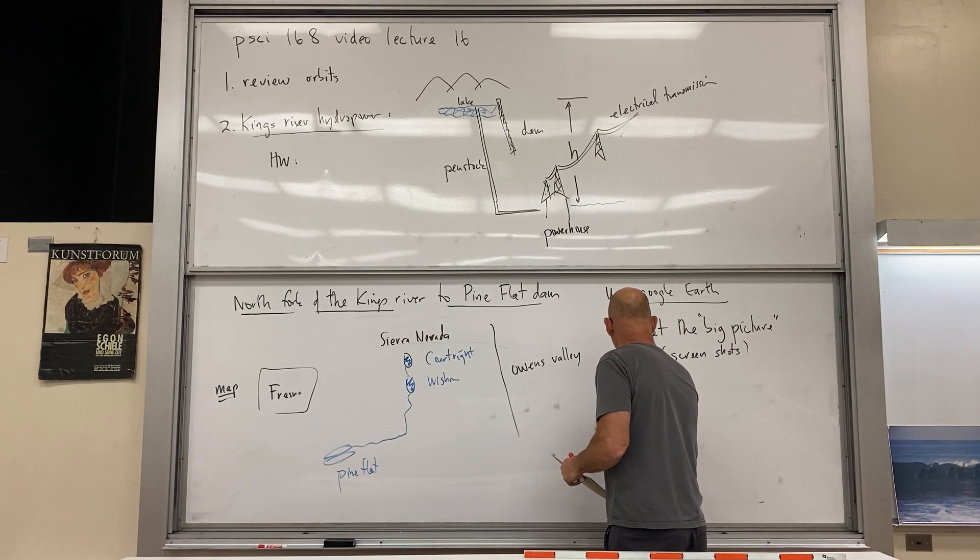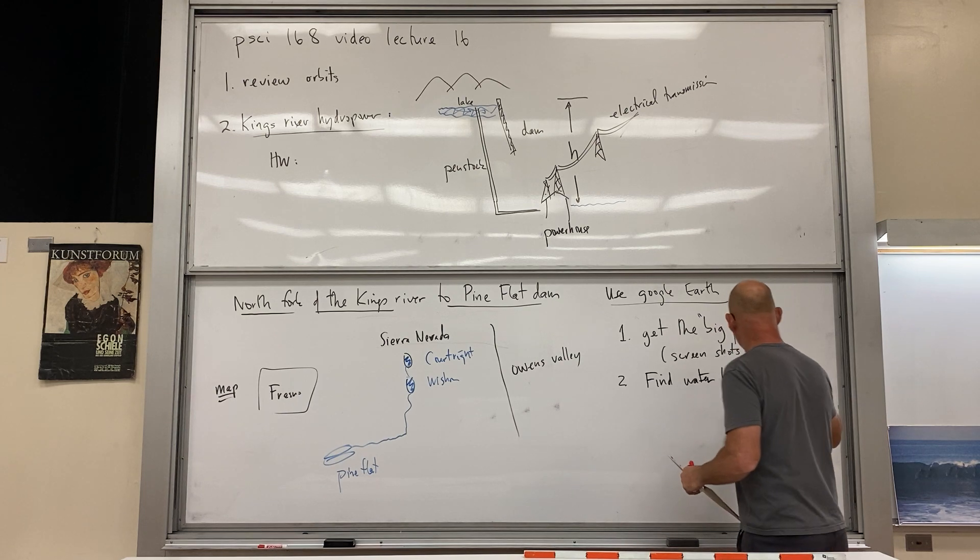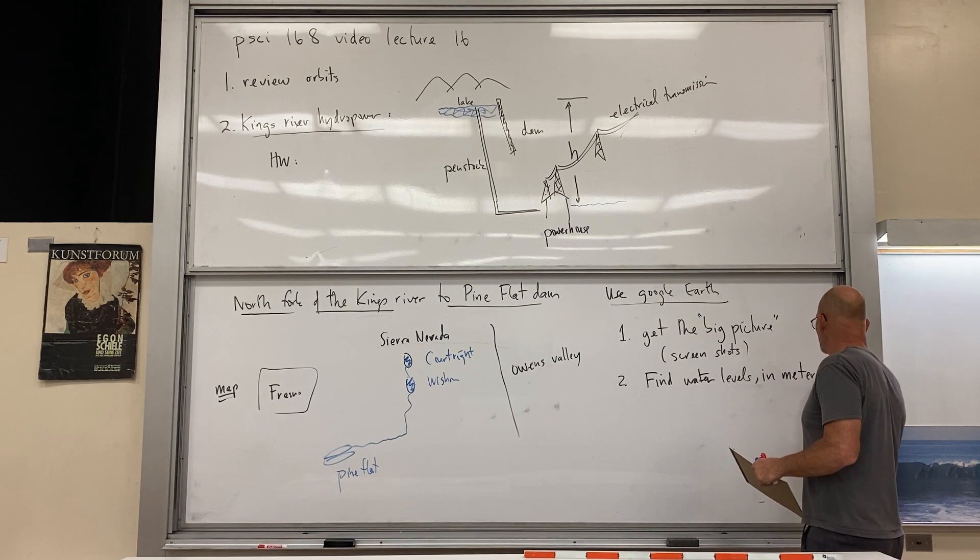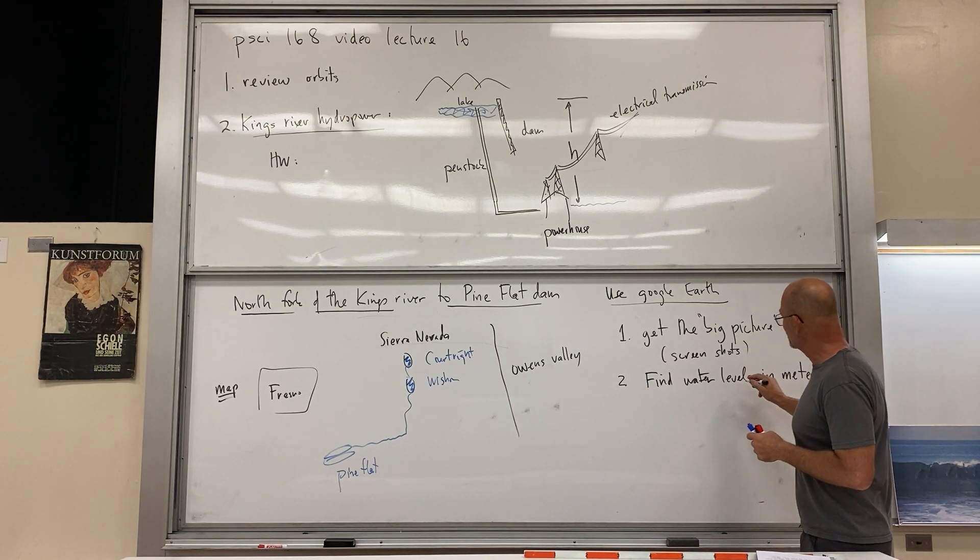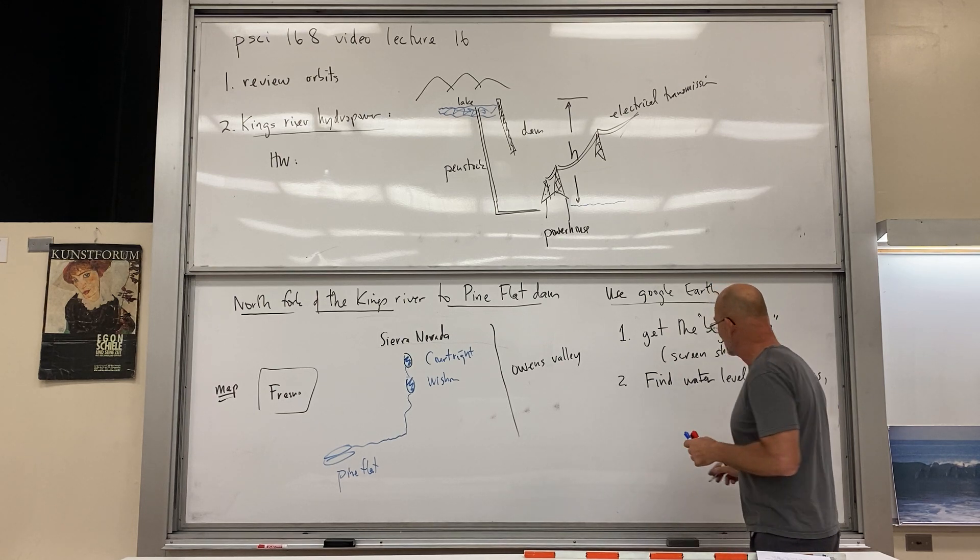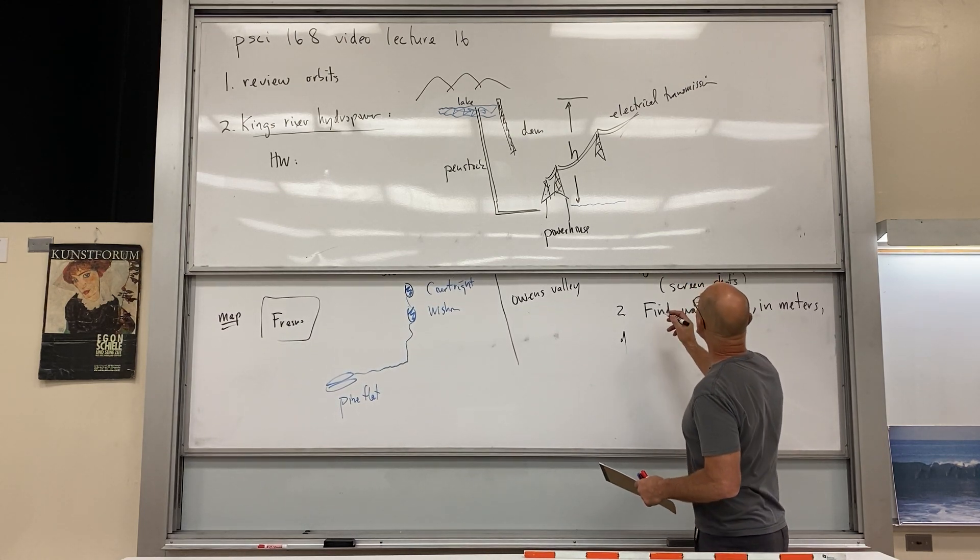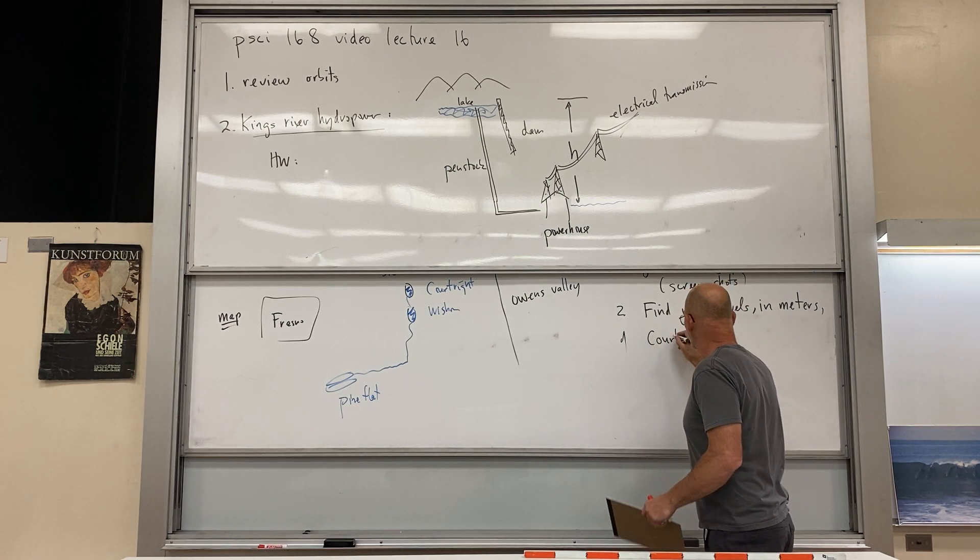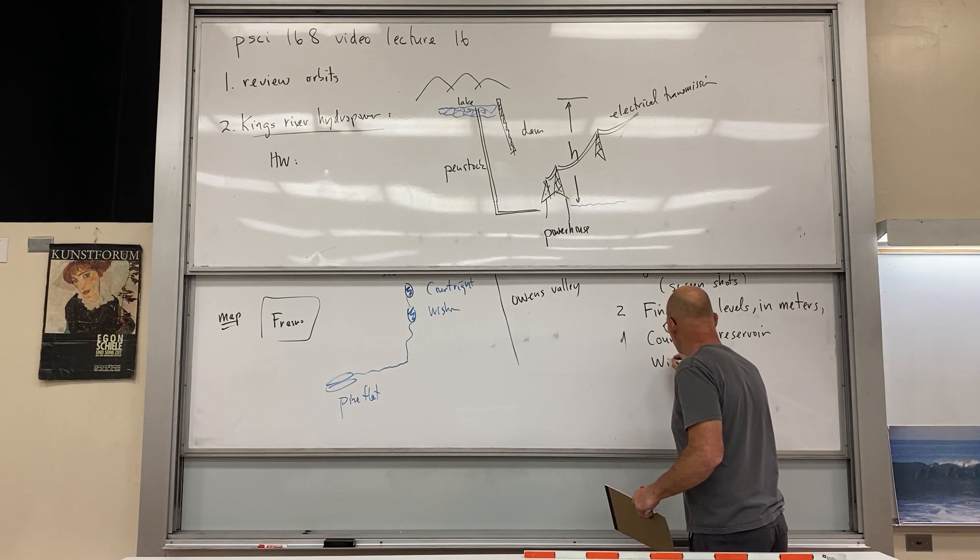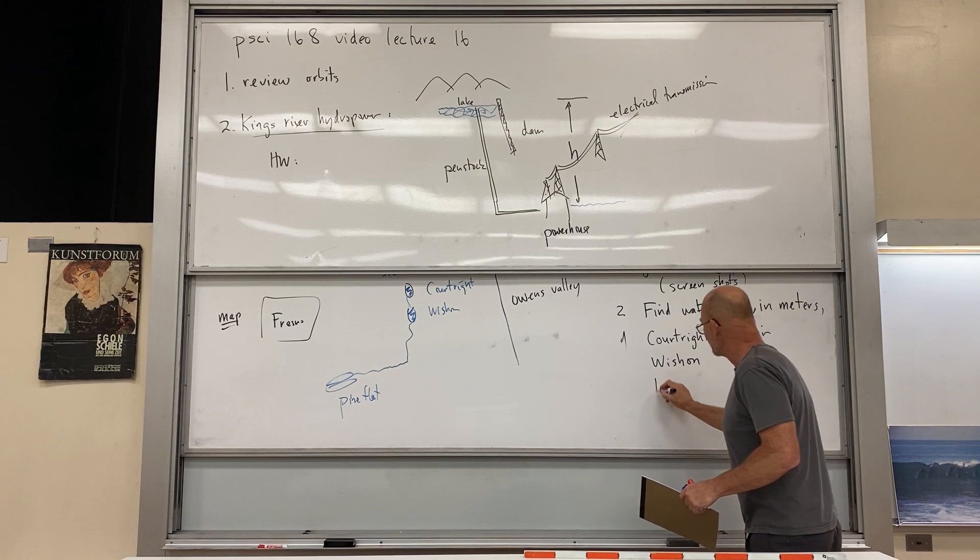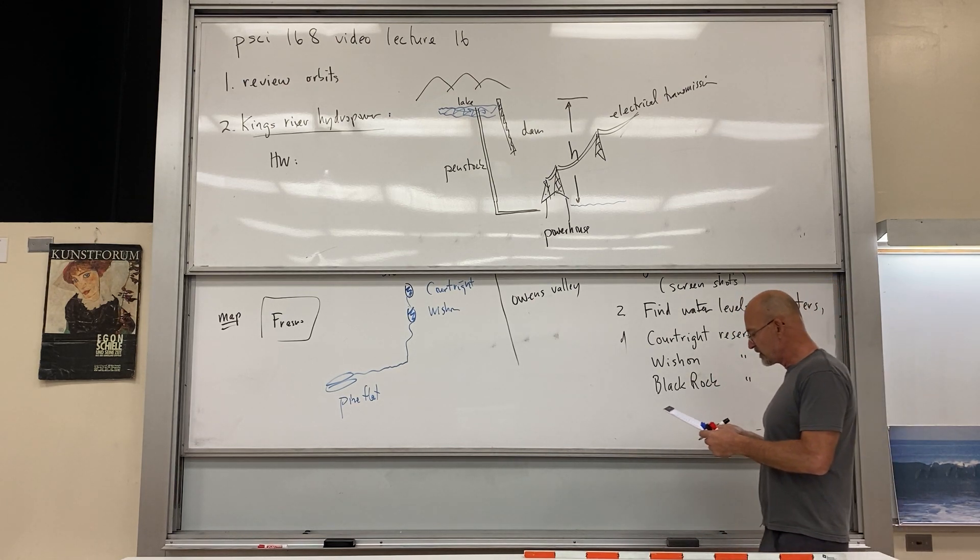You'll see all of these things. For example, these penstocks—some of them are buried, but some of them are actually steel pipes running down the surface of the mountain. You can just zoom in on that and see everything, see quite a bit. So let me go ahead, and I'm going to put down this list for us, make sure it's legible. So two: we want to find the water levels in meters. And when I just opened up Google Earth, what you can get the meters. So water levels are the water levels above sea level, okay? Water levels of the reservoirs above sea level in meters of, and here's my little list here: Courtright Reservoir.